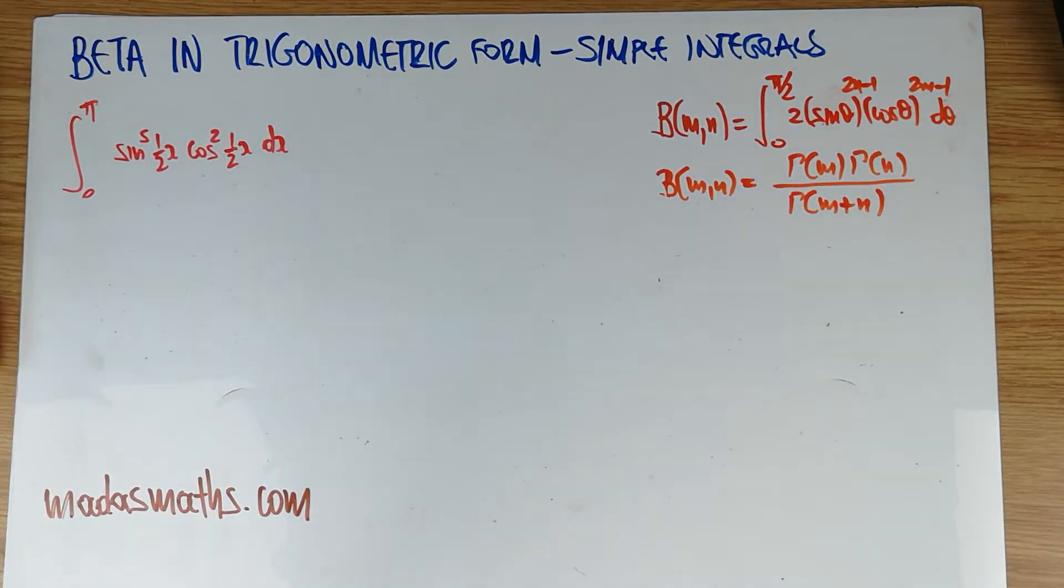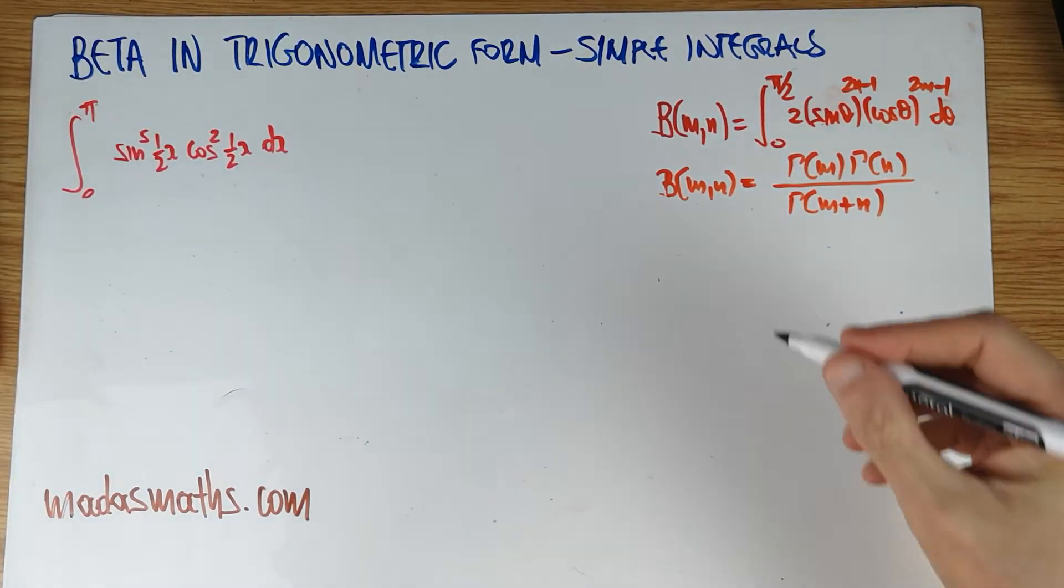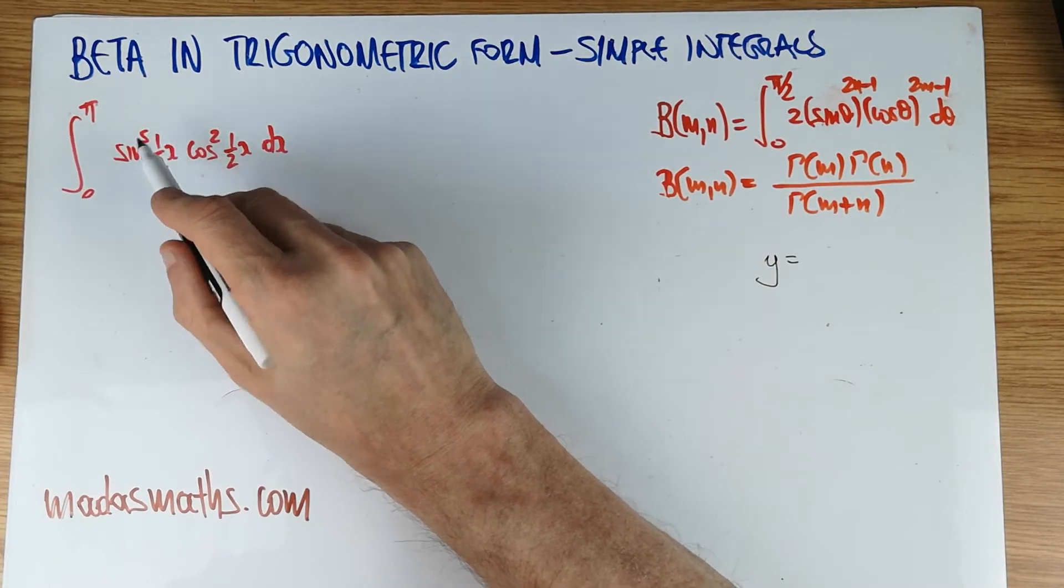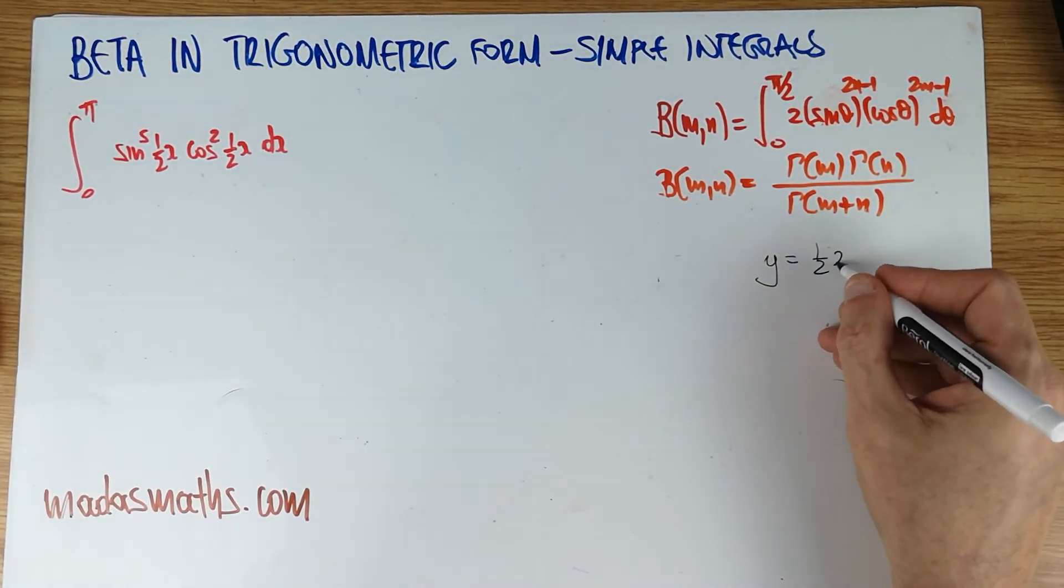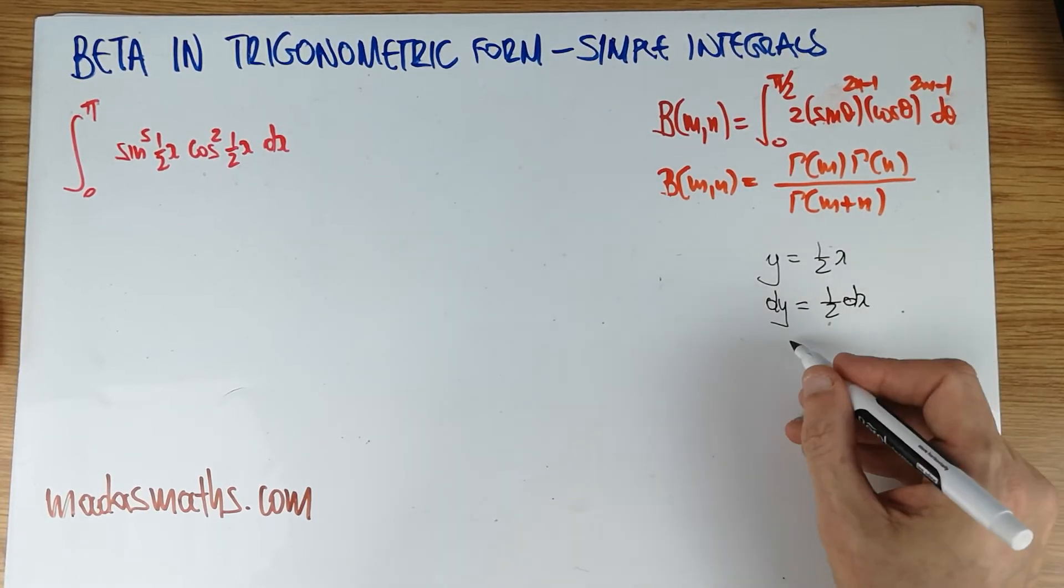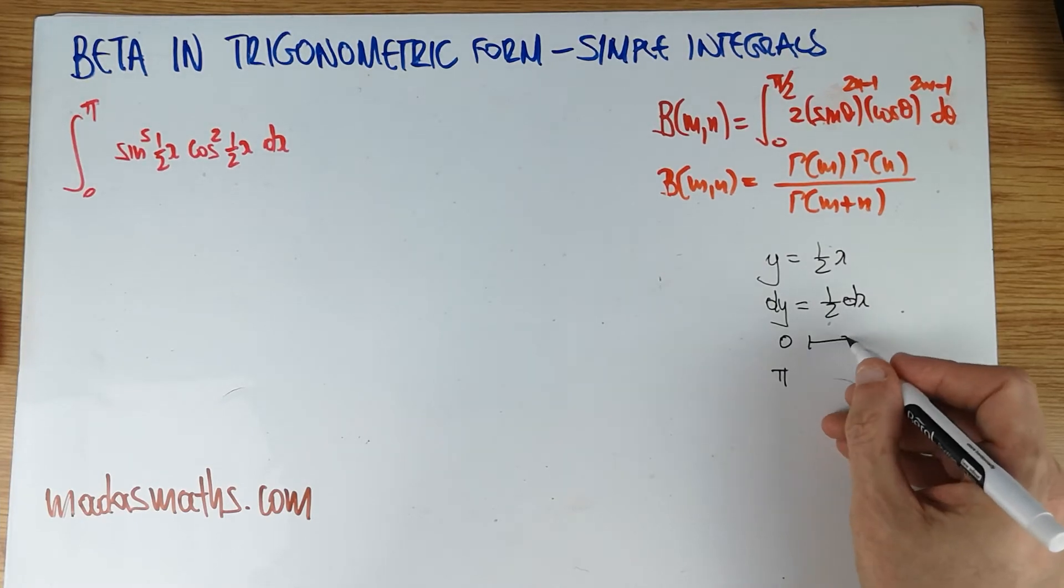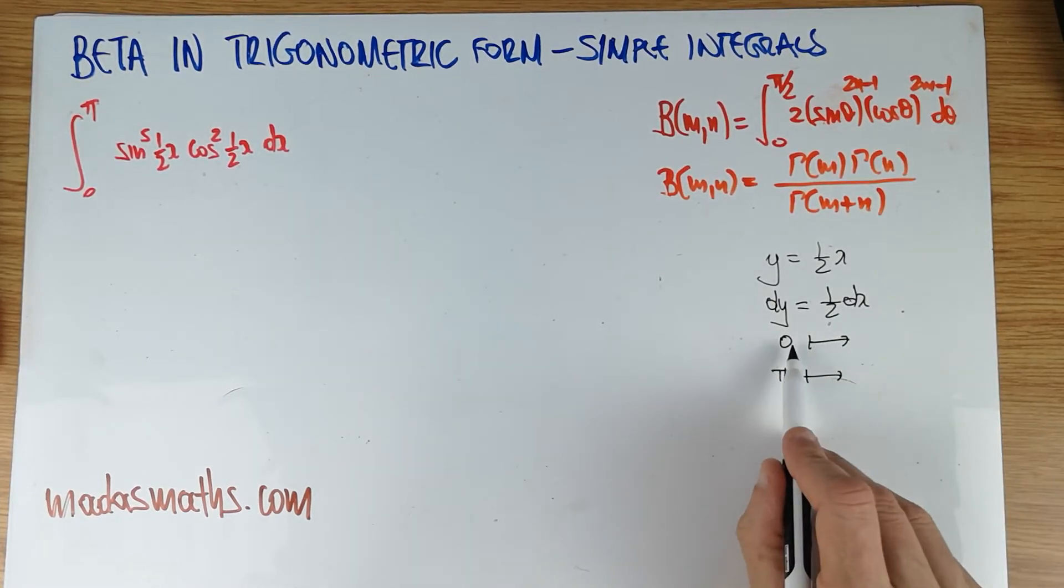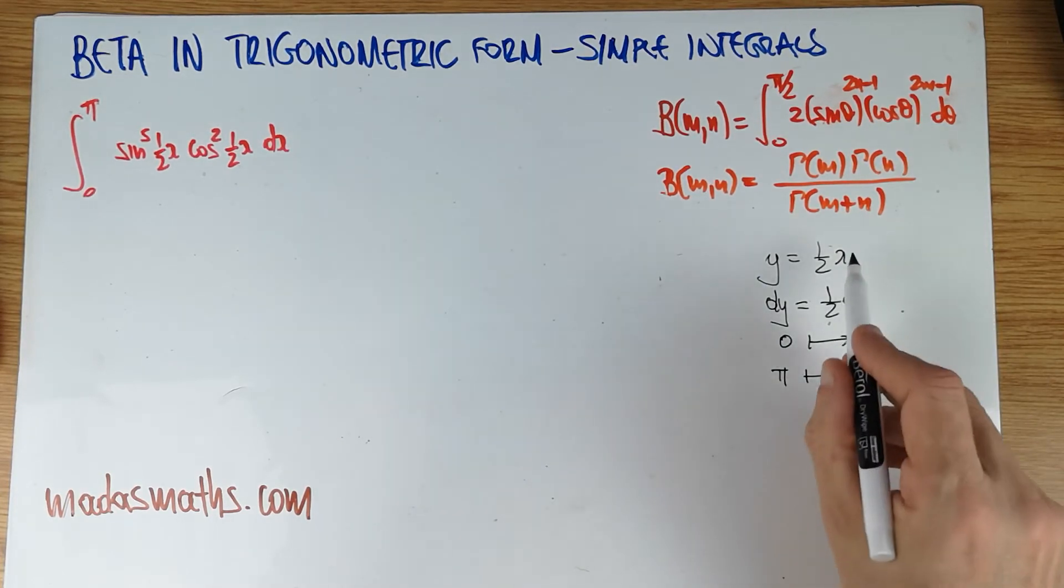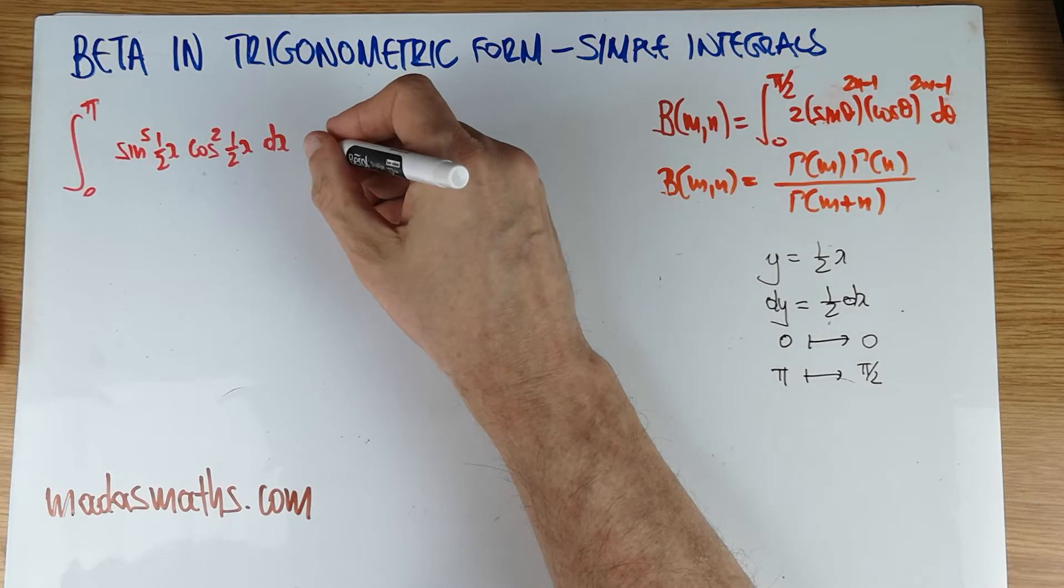Cos squared of half x dx. Again, we need a substitution to get the limits in the correct form, 0 to pi over 2. So, the substitution will be, of course, let's call this bit y. y is a half x. So dy is simply a half dx. And the limits, of course, by construction. Now, these are x limits. When x is equal to 0, y also becomes 0. And when x is equal to pi, half of pi is, of course, pi over 2. And the limits sort themselves out.